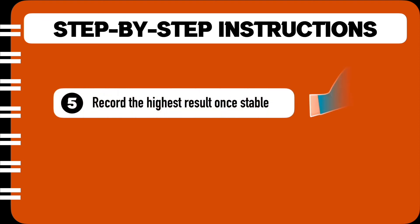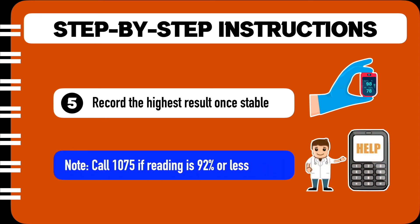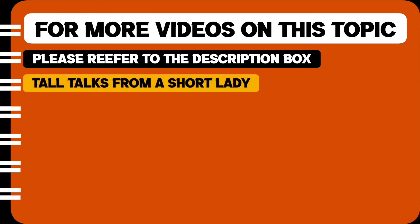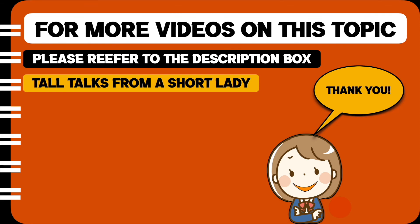The last step says: record the highest result once the reading is stable. There is a note after it which says that in case your reading is 92% or less, please call the emergency number. This is all for this video. For more videos on this topic, please refer to the description box below. The name of my channel is Doll Talks. Thank you and bye.